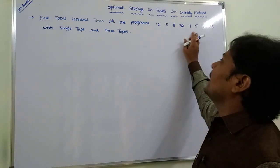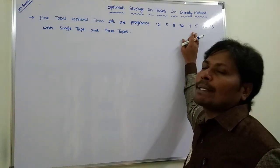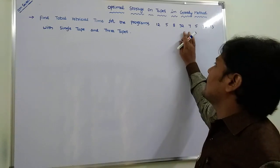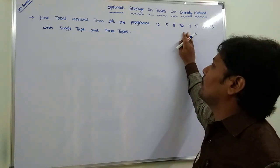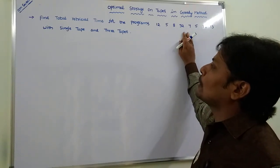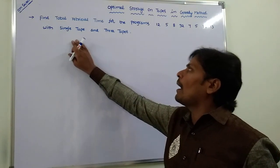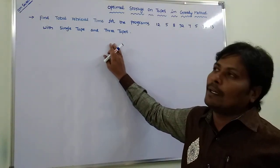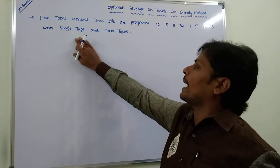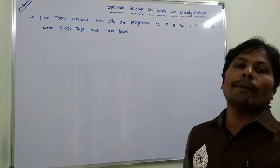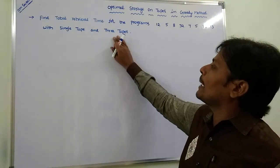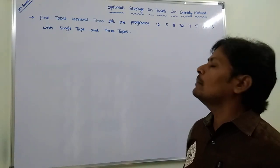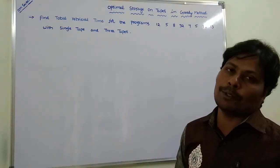In this problem, there are 8 programs given, that is n is equal to 8. These 8 programs can be assigned to a single tape and multiple tapes. By using a single tape, what is the total retrieval time? By using multiple tapes, what is the total retrieval time? We have to find out.